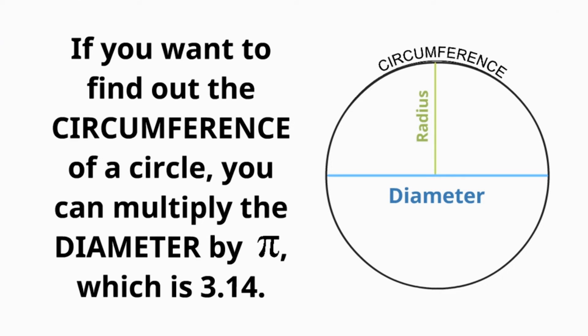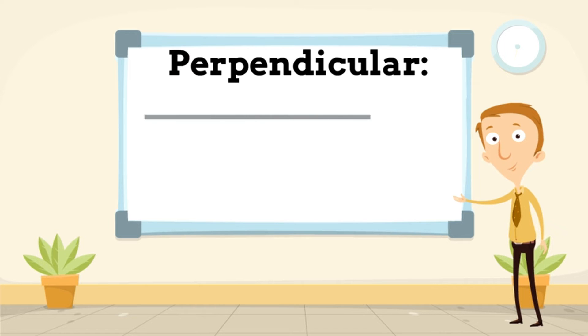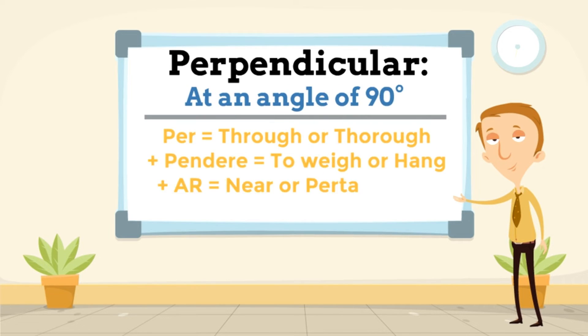Perpendicular, at an angle of 90 degrees. Per, meaning through or thorough, plus pender, meaning to weigh or hang, plus icular, meaning near or pertaining to, make perpendicular.